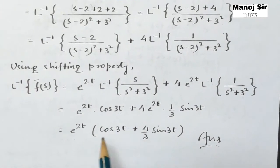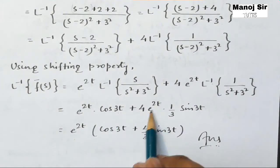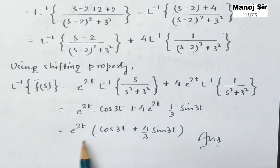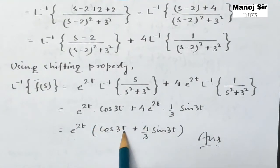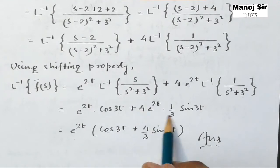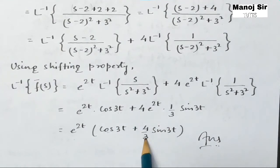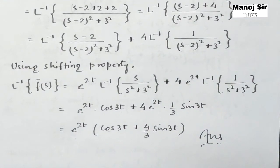Taking e^(2t) common from both terms — since e^(2t) is present in both — we are left with e^(2t) [cos(3t) + (4/3) sin(3t)]. This is the final answer. Thank you so much for watching this video.